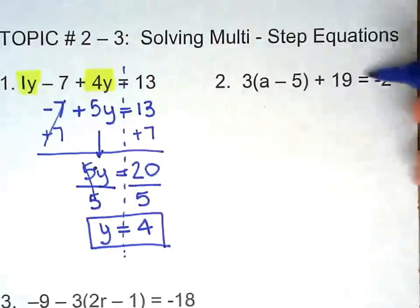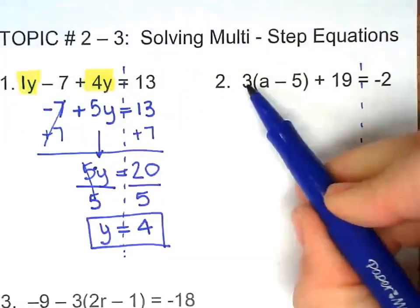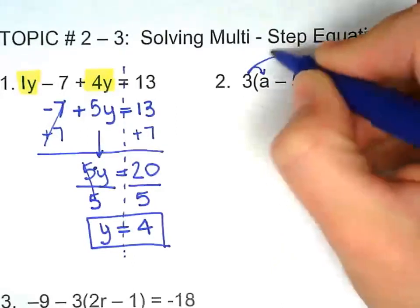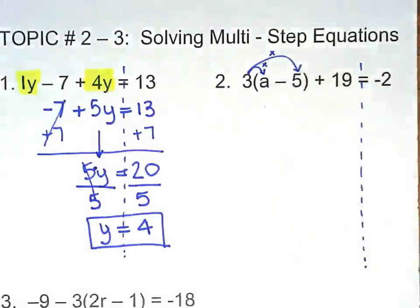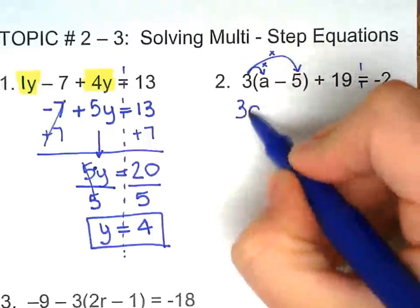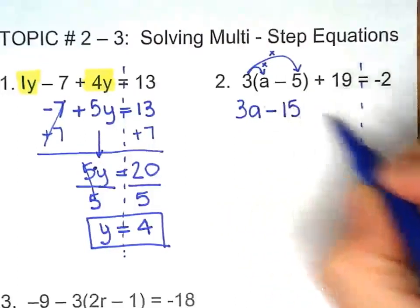Now with number 2, we're going to have one extra step because we have to distribute the 3. And when we distribute, we're multiplying. So there's a little times sign right there. So 3 times a, 3a, minus 3 times 5, 15.